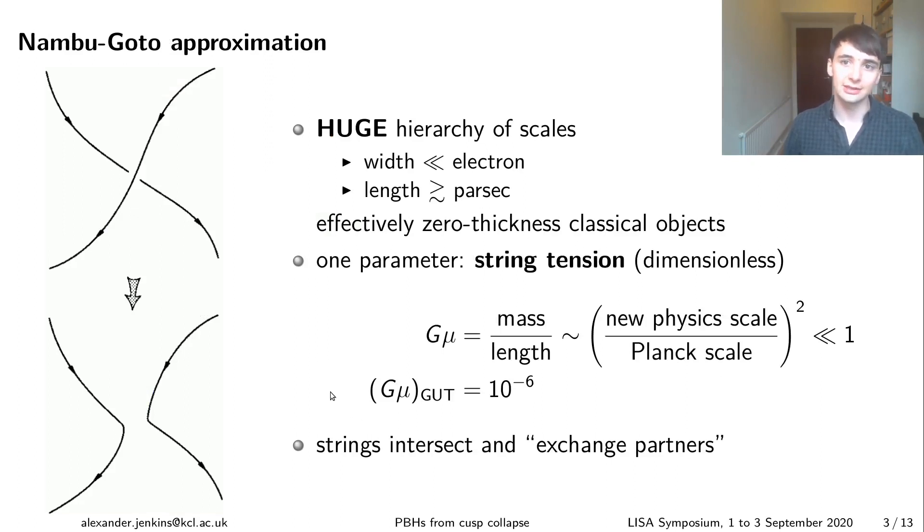We typically describe these things using something called the Nambu-Goto approximation, which recognizes the enormous hierarchy of scales in the problem. So the width of the string is typically much less than the size of an electron, but their length, they're astrophysical objects, so it's typically parsecs or even gigaparsecs. So what that means is it's a very good approximation to just treat them as being zero thickness classical strings.